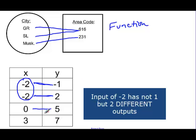0 goes to 5, and the input of 3 only goes to 7. But right here, we have not a function. It's not a function because the input of negative 2 has two different outputs.